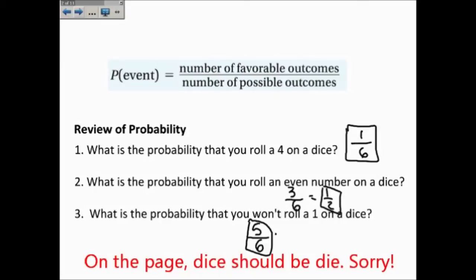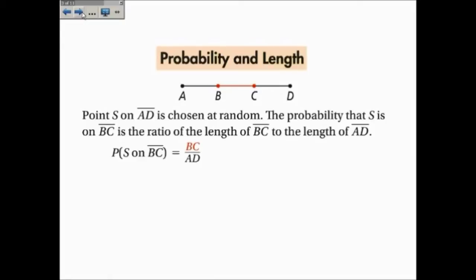Now, this lesson is more on geometric probability, meaning probabilities of lengths and areas. Pause this if you want time to copy this down in your notes. If point S is on AD chosen at random, the probability that S is on BC is the ratio of the length of BC to the length of AD.